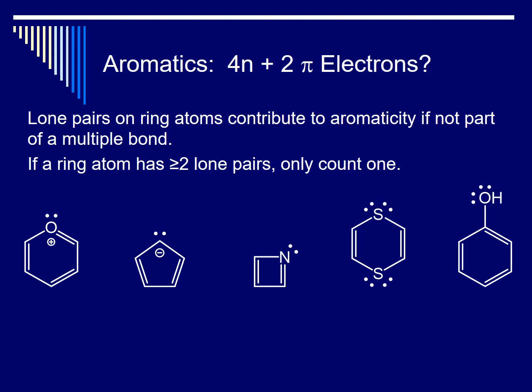Now let's consider lone pairs on ring atoms, because sometimes we count them for aromaticity purposes and sometimes we don't. We count lone pairs on ring atoms when the ring atoms are not part of a double bond. The reason is that the lone pair is in an sp2 hybrid orbital, not a p orbital, for lone pairs on atoms that are part of a multiple bond. For the first example, we don't count the lone pair on the oxygen because the oxygen is part of a double bond. Hence, we only count the pi electrons in the double bonds, and there are six. For the second example, we do count the lone pair on the negatively charged carbon, because this ring atom is not part of a double bond. So we count both the double bonds and the lone pair to get six.